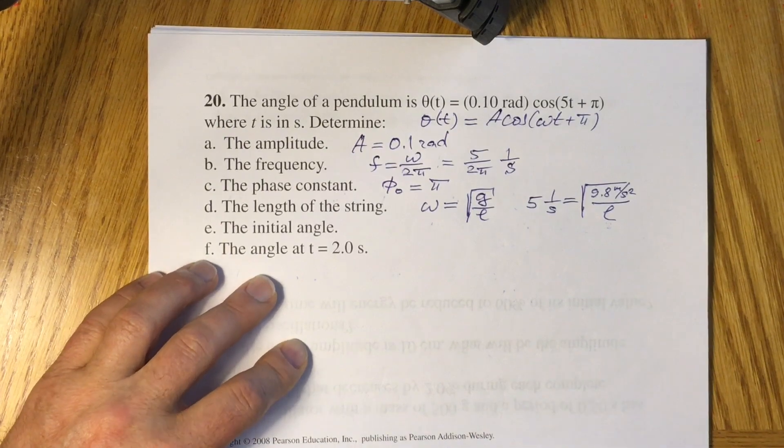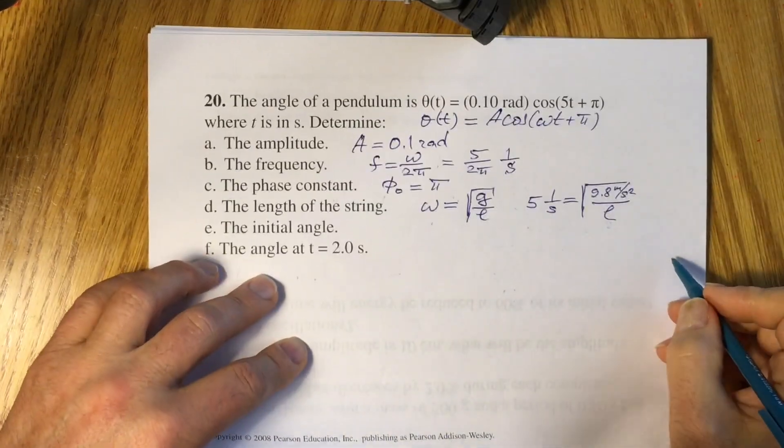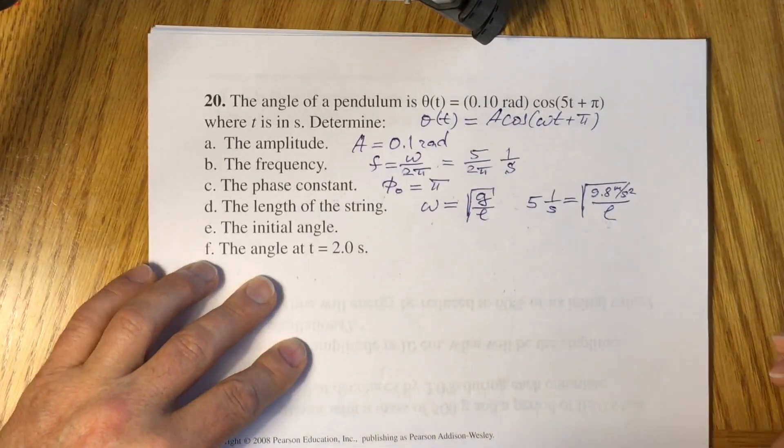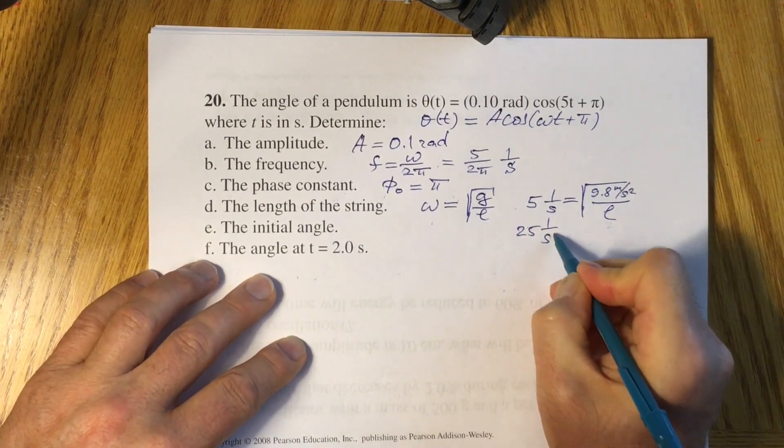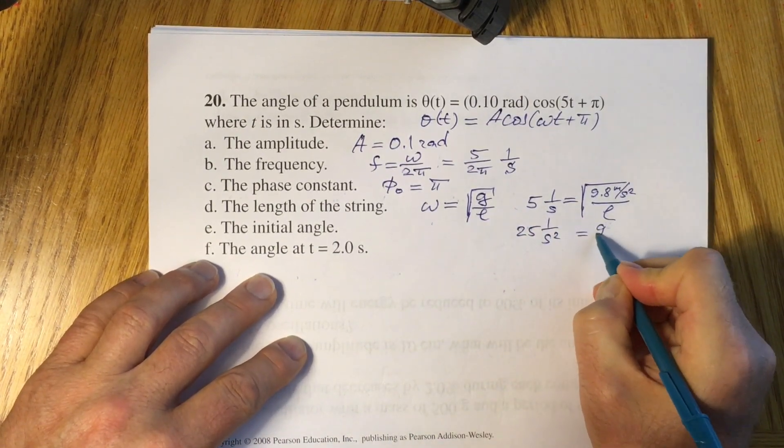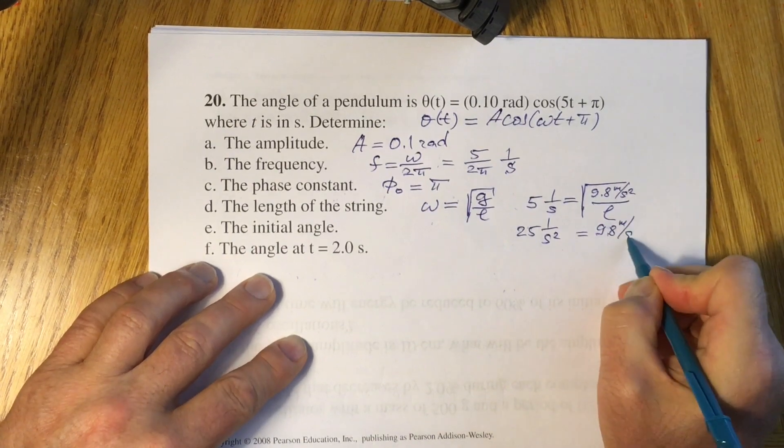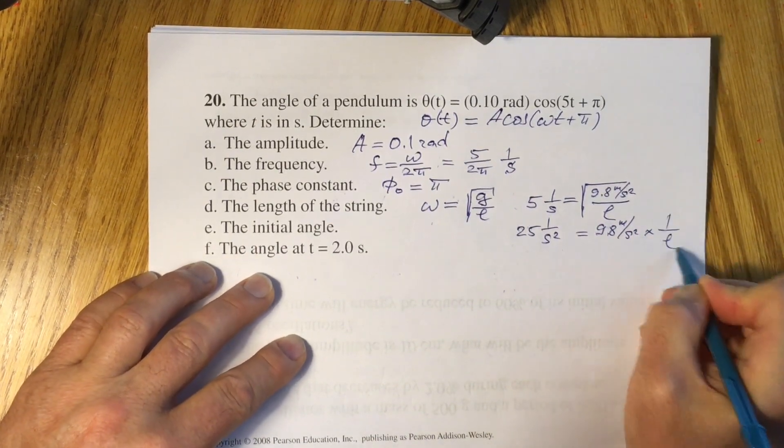And from here you can find the length of the string. If you square both sides, you will have 25, 1 over second squared, equal 9.8 meter per second squared times 1 over L.